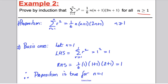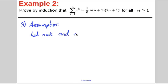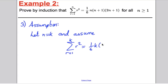Now we move to the third stage, the assumption stage. Let n = k and assume the proposition is true for n = k. So we assume that the sum from r = 1 to k of r² equals (1/6)k(k+1)(2k+1). You're substituting k for n and assuming this is true. What you're trying to show in the next step is that the sum from r = 1 to k+1 of r² equals (1/6)(k+1)(k+2)(2k+3), but you write that on a scrap piece of paper as your aim.